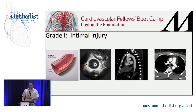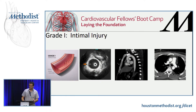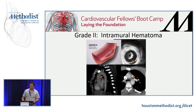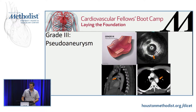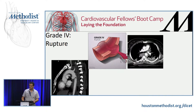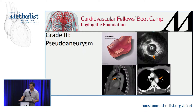These are pictures going from schematic images into IVUS, angiogram, and CAT scan showing intimal tear — grade one. Grade two is where you have intramural hematoma. Grade three is pseudoaneurysm, and grade four is obvious complete disruption.